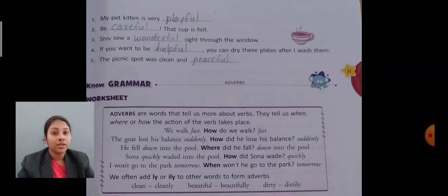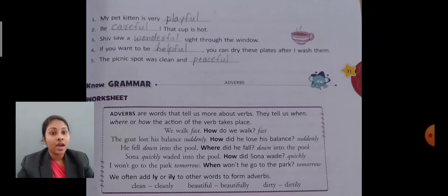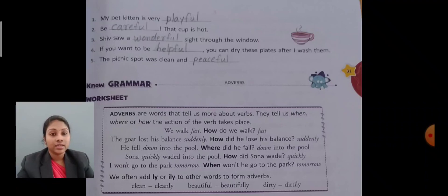Next part is grammar — we learned about adverbs. Adverbs are words which tell us about verbs: when, where, or how the action of the verb takes place. Some examples: 'We walk fast.' 'The goat loses his balance — suddenly — he fell down into the pool.' So adverbs tell us when, where, or how the action takes place.